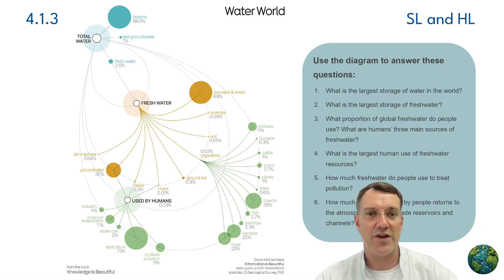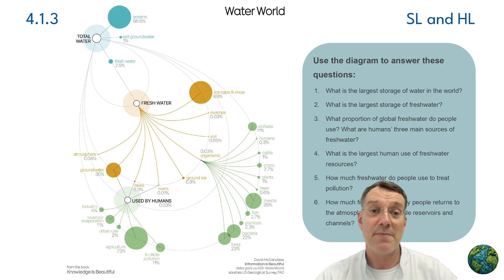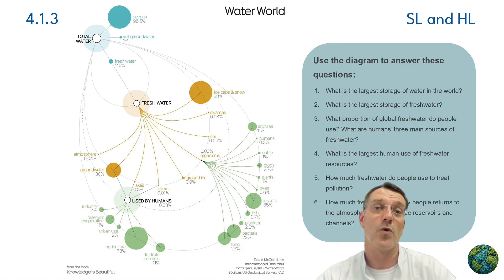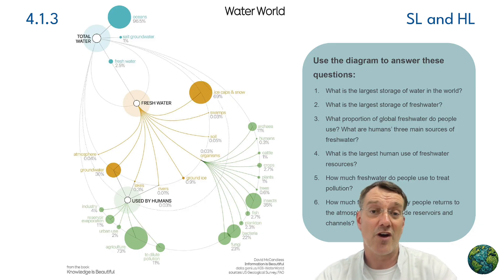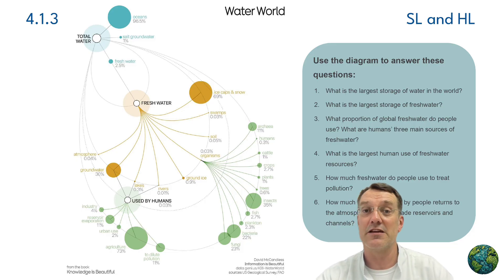This diagram can help answer questions about water storage and usage. Humans use only about 0.03% of all the globe's freshwater, and that's mainly from groundwater, lakes, and rivers. Most of the freshwater that people use is for agriculture, which accounts for 73% of all human water use. We use about 11% of our freshwater to treat pollution, which is almost exactly the same as the amount of freshwater that people return to the atmosphere through evaporation from reservoirs, man-made lakes, and other infrastructure like irrigation channels.